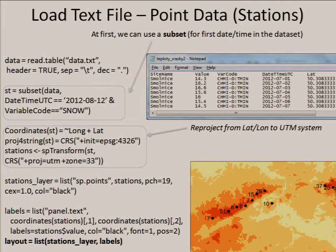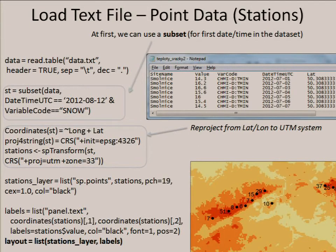For the observations which change in time, we have a text file. Using the read.table command we can read the text file. This text file contains data for all the time steps, so we can subset it to use just one time step. Then in the second part of this example script, we assign the coordinates, and we can also plot the labels with the point values as shown in the example.